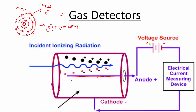In today's video we will discuss gas detectors. A gas detector consists of a cylindrical chamber filled with gas or air. At the center there is an electrode insulated from the cylinder wall, known as the anode. The cylinder wall acts as the cathode. The anode is connected to the positive terminal of the battery and the cathode to the negative terminal.